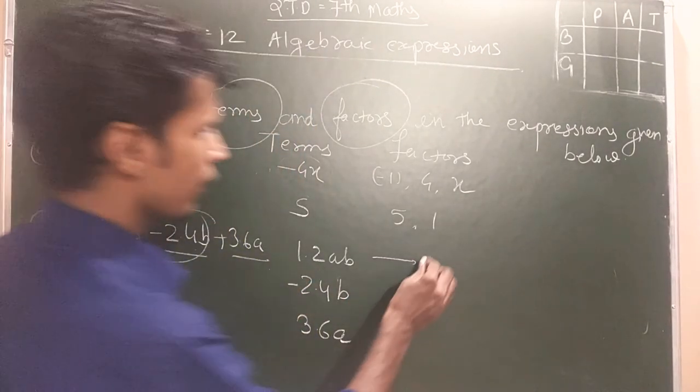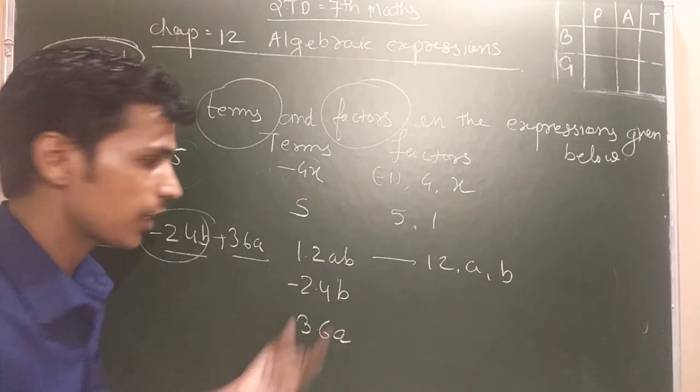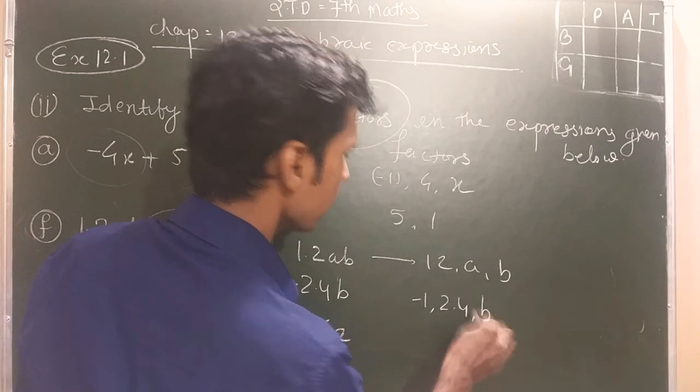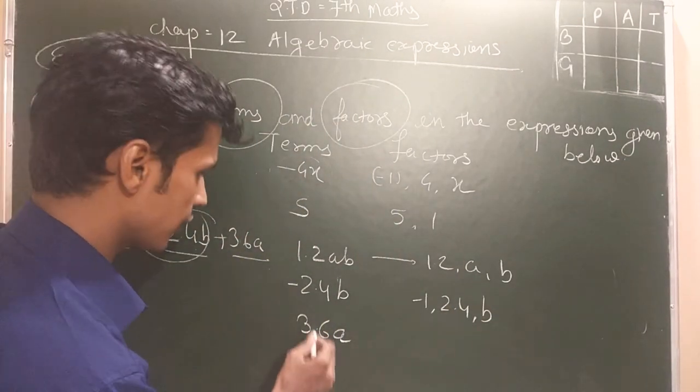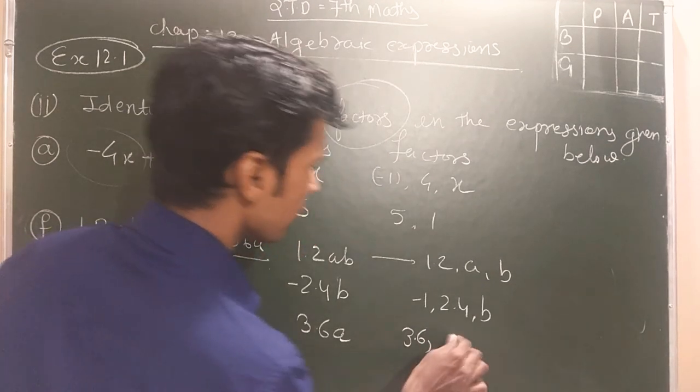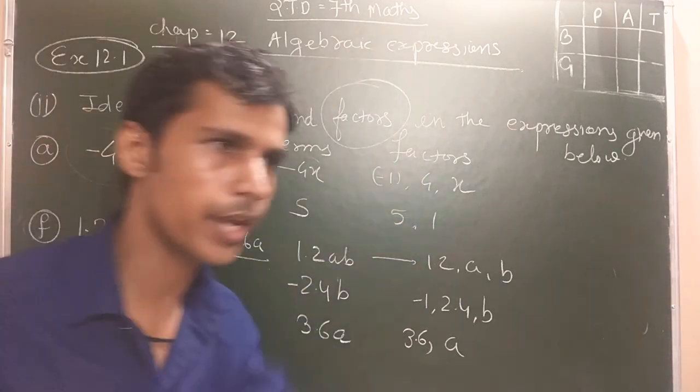Now iska factor kya honge? 1.2a and b. Iska factor kya honge? Minus 1, 2.4 and b. Iska factor kya honge? 3.6 and a.